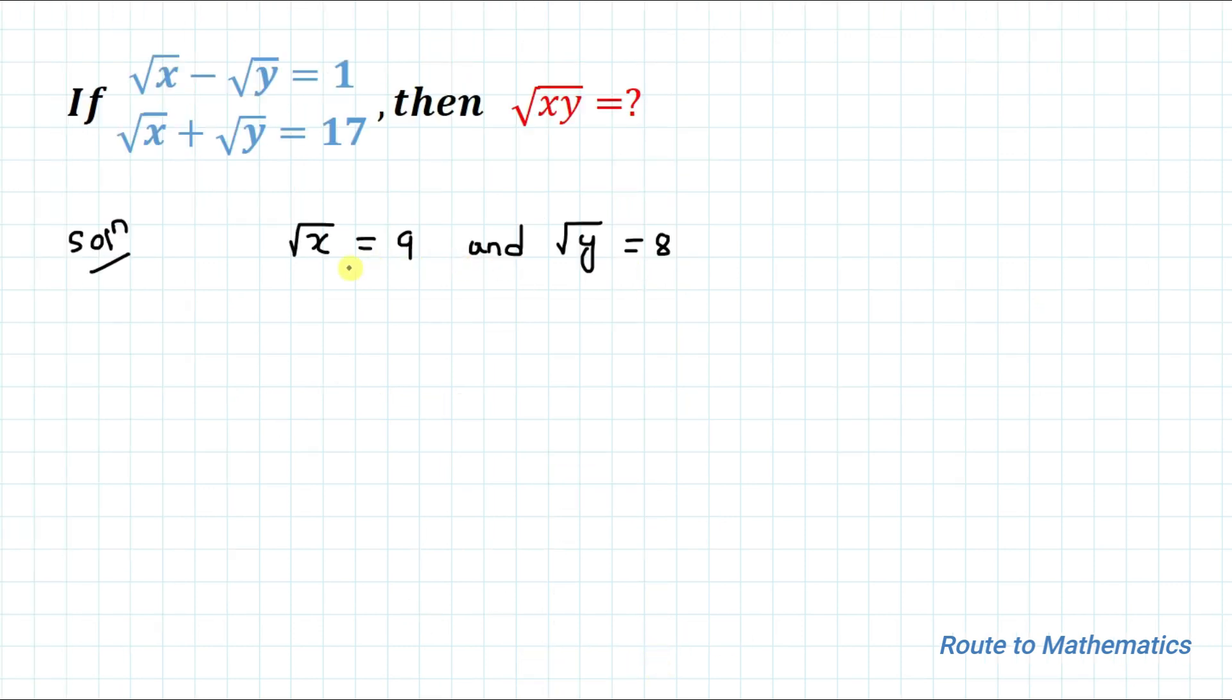We get the solution: root x equals 9 and root y equals 8. But we are asked to find the value of root of xy. Root of xy can be written as root x multiplied with root y, which equals 9 multiplied by 8, equals 72. That's the answer.